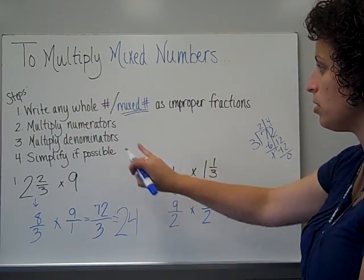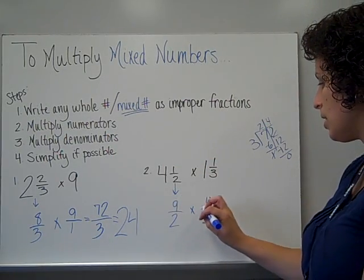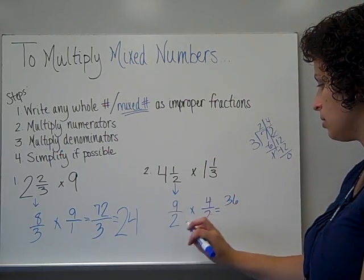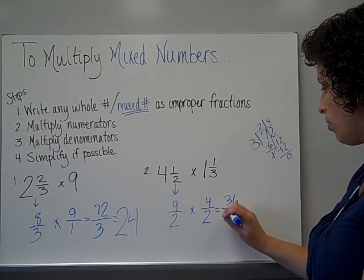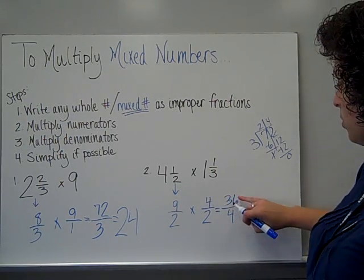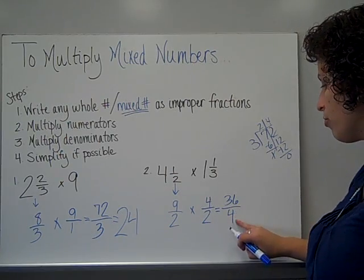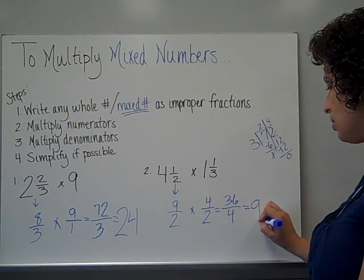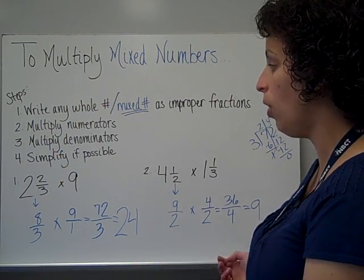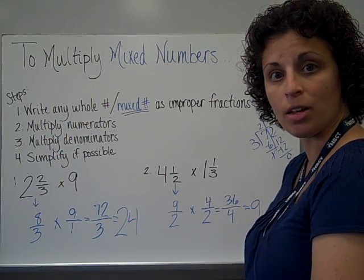Next step, multiply the numerators, multiply the denominators. 9 times 4, 36, 2 times 3, 6, and then simplifying if possible, 36 divided by 6, which is 6. So each of these totaled a whole number answer instead of making a mixed number.